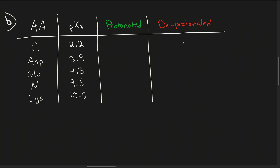The chart has a protonated column and a deprotonated column. For the C-terminus, aspartic acid, and glutamic acid — all carboxyl groups — when protonated the charge is zero, and when deprotonated the charge is negative one. For the N-terminus and lysine — both amino groups — when protonated the charge is plus one, and when deprotonated the charge is zero, a neutral amine.